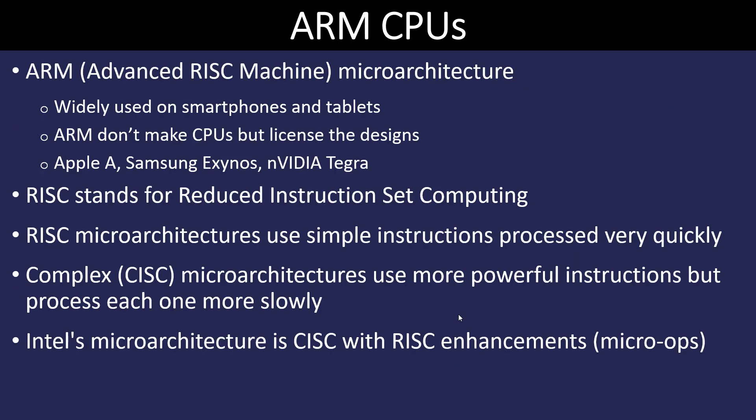There is another type of CPU called an ARM, or Advanced RISC Machine micro-architecture. This is what you're going to find in your smartphones and tablets. Currently, they're not used in workstations or personal computers, but there is a growing trend that this may happen. Some of the vendors for ARM CPUs would be Apple, Samsung, and NVIDIA. They use something called a reduced instruction set for computing, which simplifies instructions and allows them to be processed very quickly.